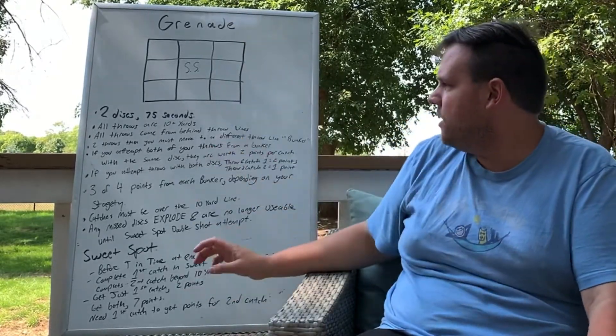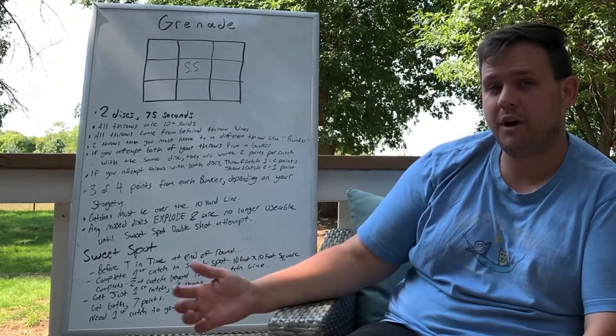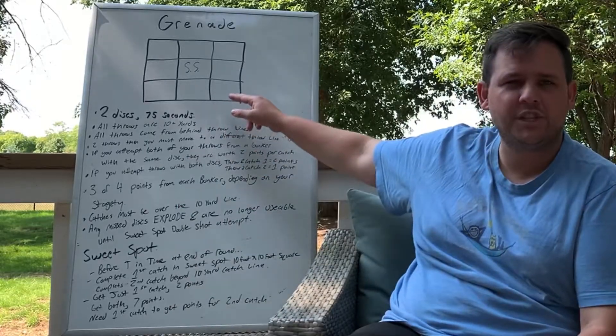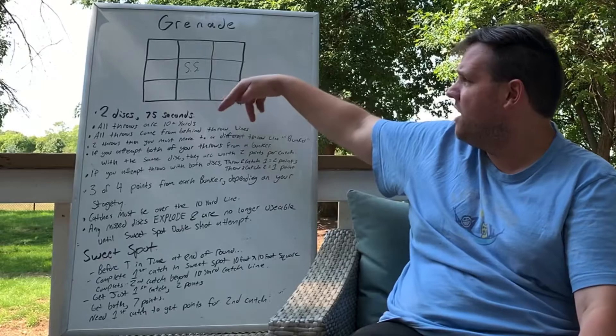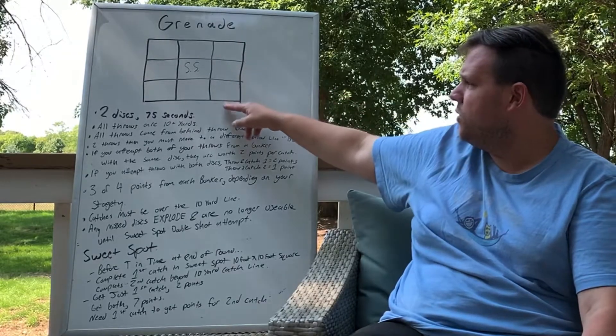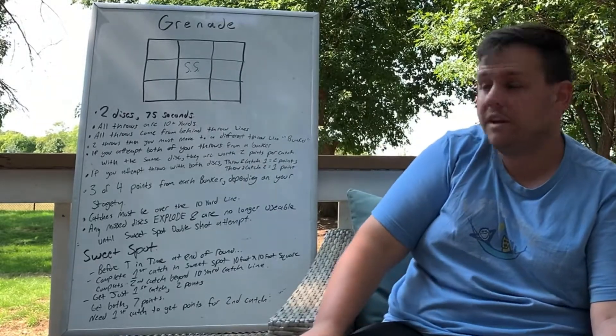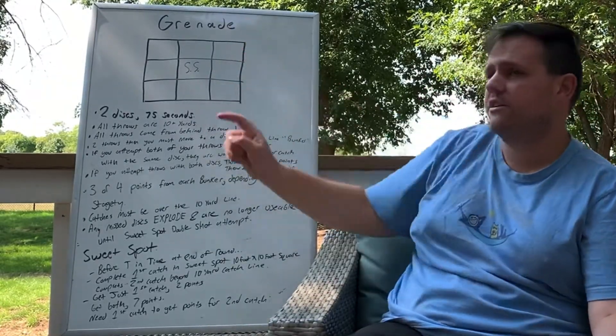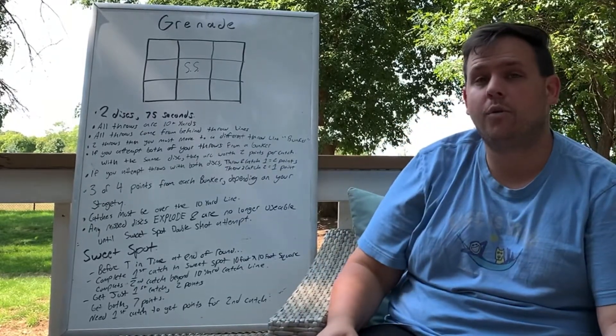After you attempt two throws from that throwing line, you're going to change bunkers or throwing lines. If you threw two there, you would then move to wherever you wanted depending on your strategy. You can move to there, there, or over there. It just needs to be a different throwing line, and that's going to go on through the whole game.